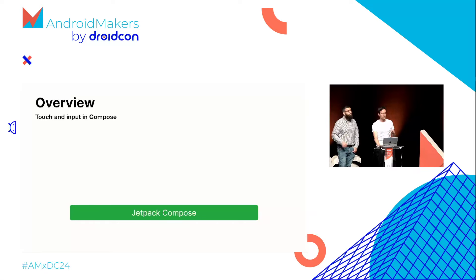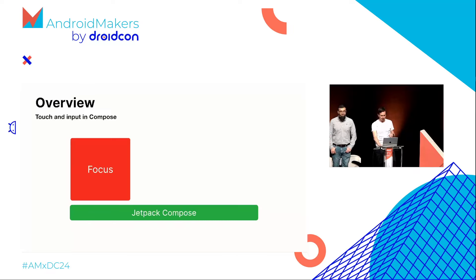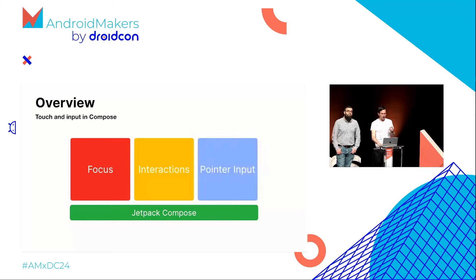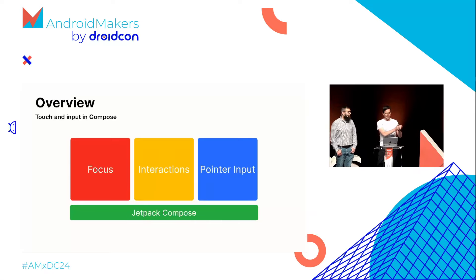Jetpack Compose comes with a gesture API to handle touch and inputs — bear in mind it's different from animations. This is used when a user presses a button, navigates to another screen using a keyboard or IME, or enters text with the software keyboard. The gesture API can be split into three main chapters: focus, interaction, and pointer inputs. Today we are not going to focus on focus and interactions, but mostly on pointer inputs.